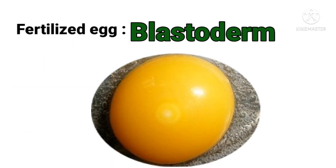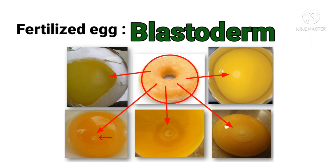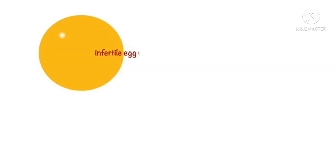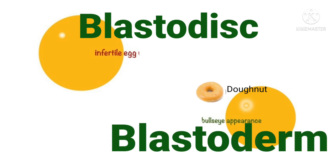In short, a fertile egg will have a circle ring with a dot in the middle — this is called a bull's-eye. A small white dot will have a bull's-eye type ring around it, which is called a blastoderm. In another way, a blastoderm looks like a donut. By this way you can differentiate between the blastodisk and the blastoderm. In conclusion: when there is a blastodisk on the yolk material, the egg is infertile; and when there is a blastoderm on the yolk material, the egg is fertile. Thank you.